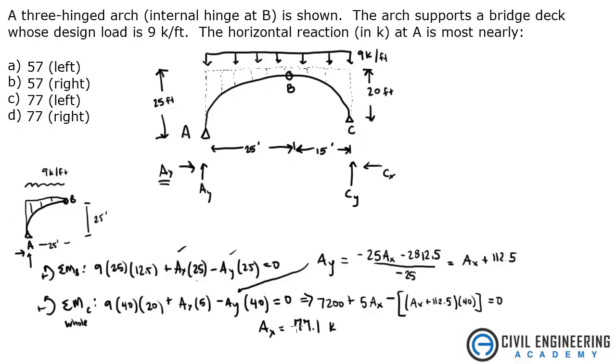So that means that the sign convention that I had was correct. If this was negative, it would mean this was supposed to be flipped. It means it would be going to the left. So this is actually going to the right. And the answer is D, 77 kips to the right.